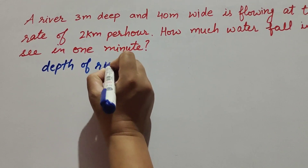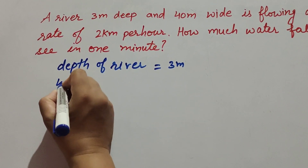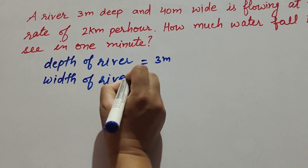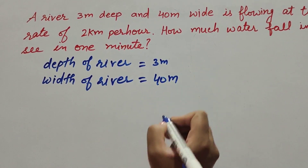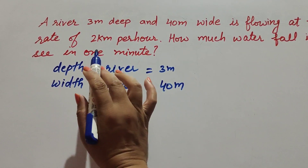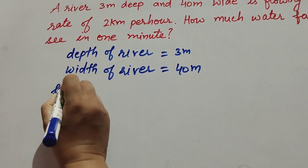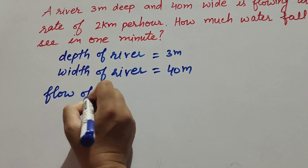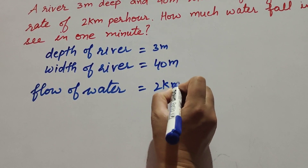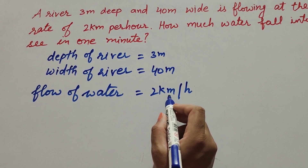So let's start. Depth of river is given as 3 meter, and breadth of river is equal to 40 meter. The river flows at the rate of 2 kilometer per hour, so the flow of water in the river is equal to 2 kilometer per hour.